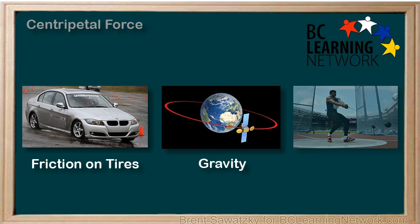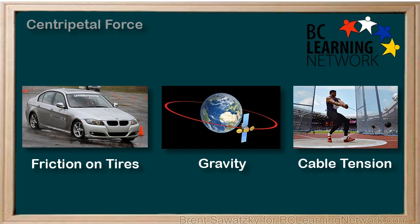When a hammer is swung in a circle, it's the tension on the cable that causes the centripetal acceleration of the ball. In this case, it's the cable that the hammer thrower is holding that causes the centripetal force.